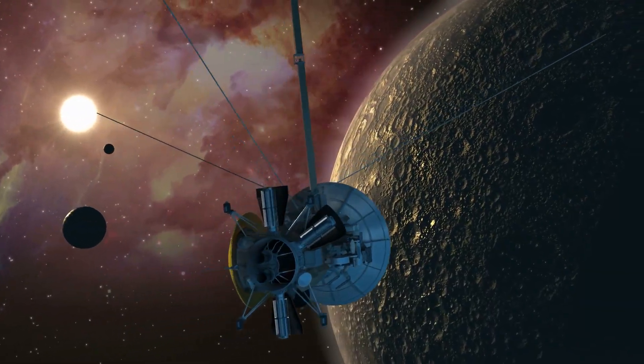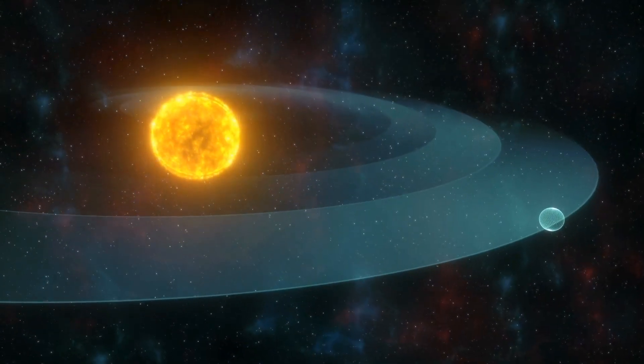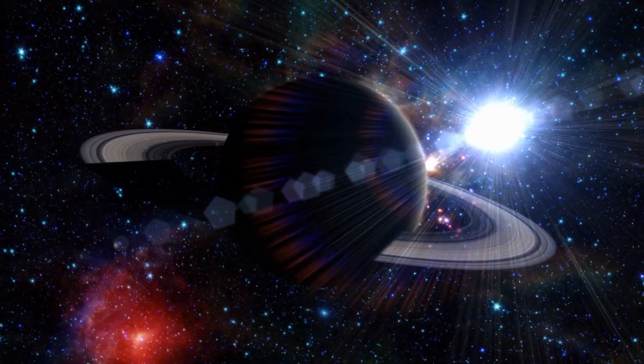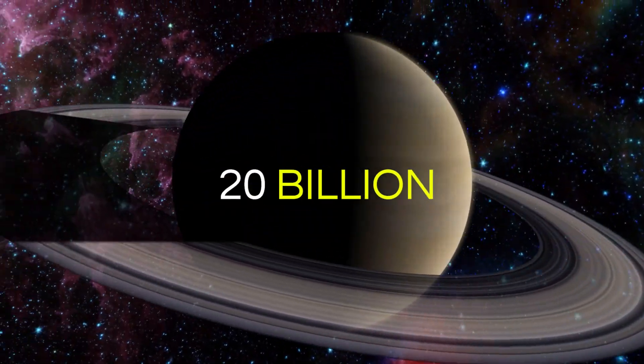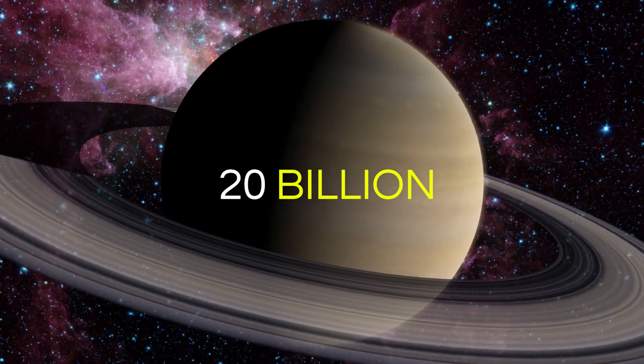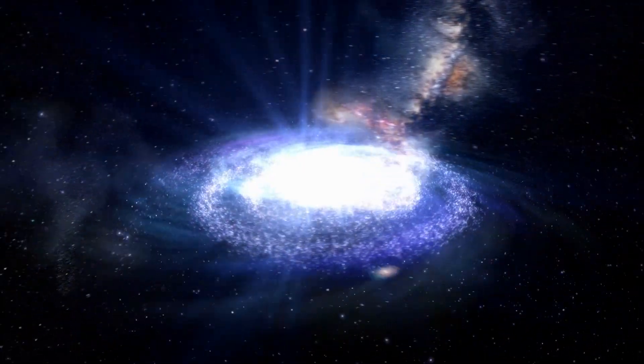With all of these discoveries, we now know that pretty much every star in the sky likely has planets orbiting it. That means there could be around 20 billion potentially Earth-like planets in our Milky Way galaxy alone.